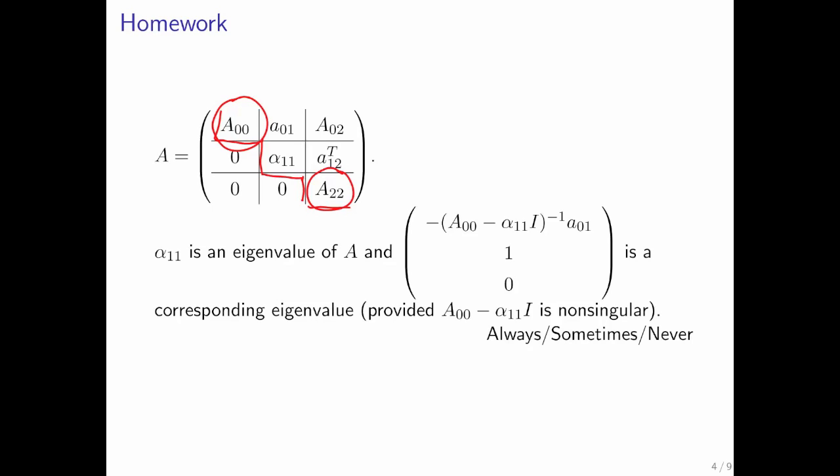They could be triangular matrices, but they could also be general matrices. The important thing is that they are square. That identifies here a scalar on the diagonal, which we call alpha_1,1. And what I want you to do is to use your skills with partitioned matrix vector multiplication to show